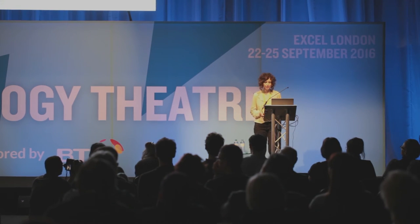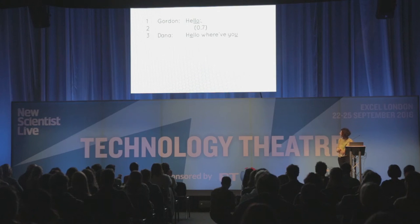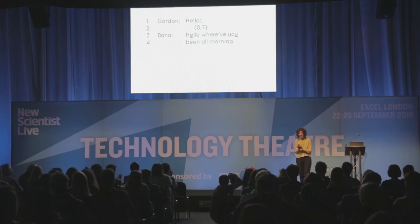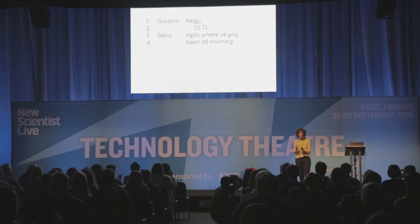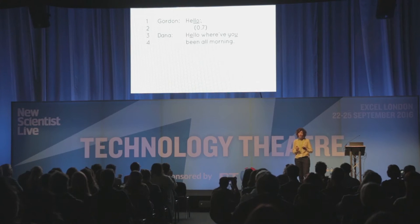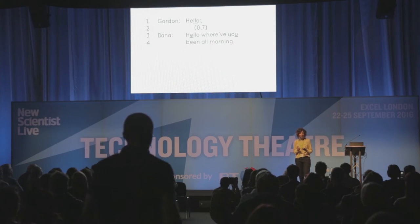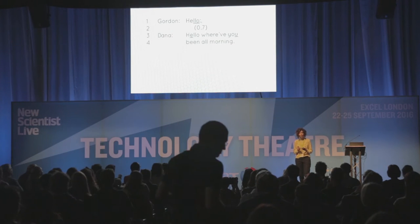Seven tenths of a second of silence is enough to tell us that what is unlikely to happen next is 'Hi, how are you? Fine, how are you?' When Hyla and Nancy were talking, they were bouncing along quickly with about a tenth of a second or less between turns. So when we see a delay, there's probably some trouble ahead. Let's see what Dana does next: 'Hello. Where have you been all morning?' — a rather challenging question.